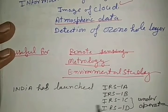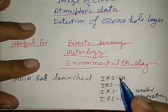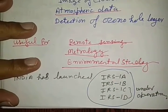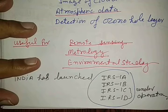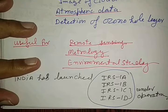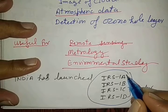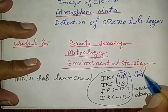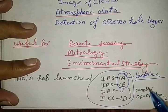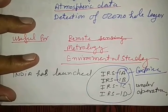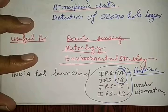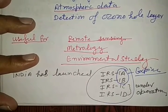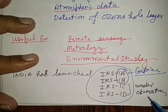Our country, India, has launched many polar satellites. There is a series of IRS: IRS-1A, IRS-1B, IRS-1C, and IRS-1D. 1A and 1B are expired, but 1C and 1D are under operation and we are collecting metrological data, environmental studies data, and remote sensing data by IRS-1C and IRS-1D.